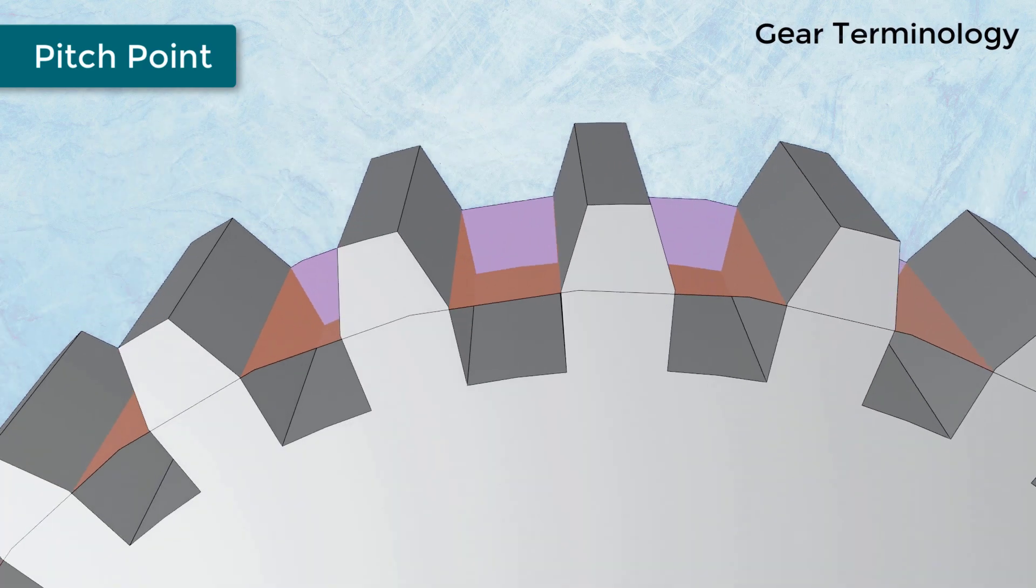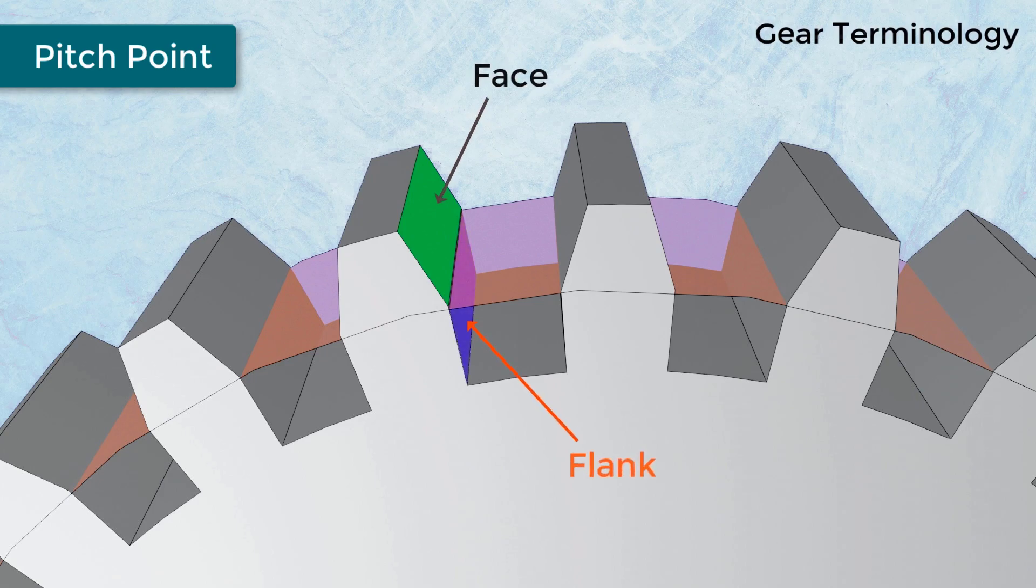The surface of the tooth above the pitch circle is called the face of the tooth. The surface of the tooth below the pitch circle is called the flank of the tooth.